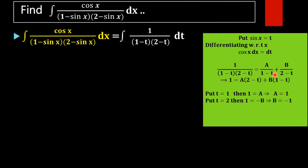On multiplying each term by (1 minus t) into (2 minus t), we get: (1 minus t)(2 minus t) cancels from the left side, leaving 1. On the right side, A times (2 minus t) remains after cancellation, and B times (1 minus t) remains. Next, we have to find the values of A and B.